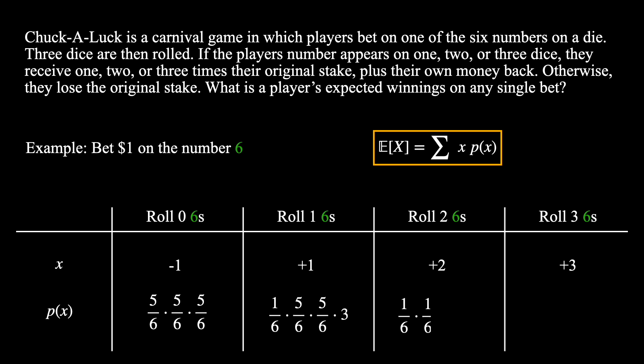Similarly, we can work out the probability of rolling two sixes. Here, two of the dice must be one-sixth, and one of the dice must be five-sixths. Again, since any of the three dice can be the die that is not the six, we multiply the overall expression by three. Finally, we get the probability of rolling all three sixes, which is simply one-sixth cubed.